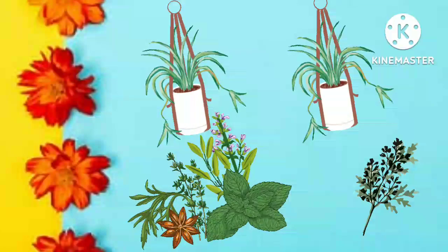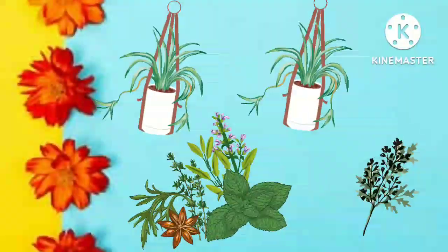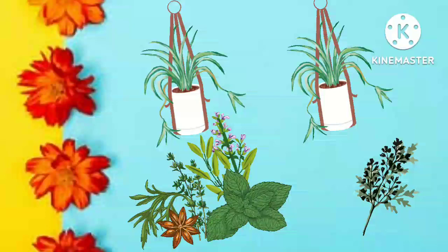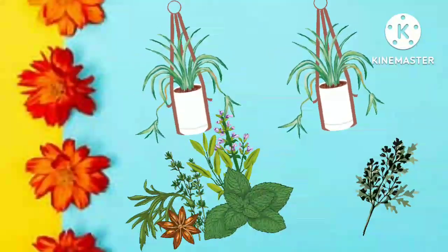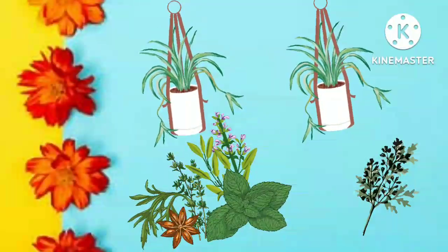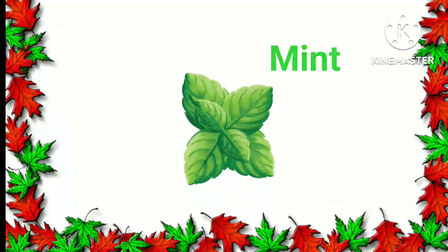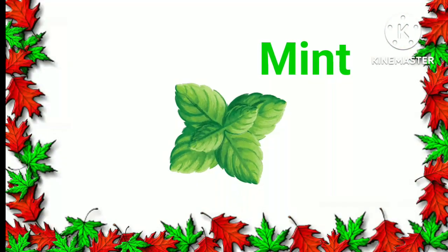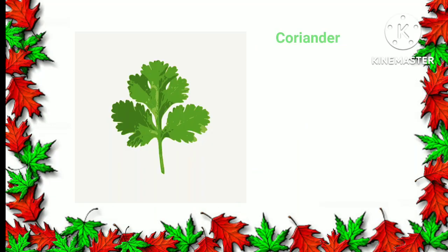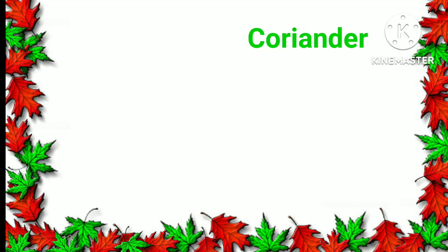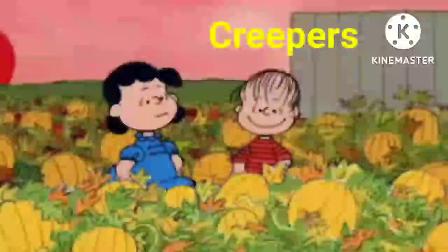Herbs. Herbs are smaller than shrubs and have soft green stems. Their leaves, seeds, and flowers are often used for cooking, making medicine, and perfumes. Mint, spinach, and coriander are some examples of herbs.